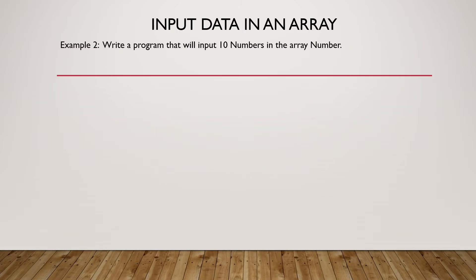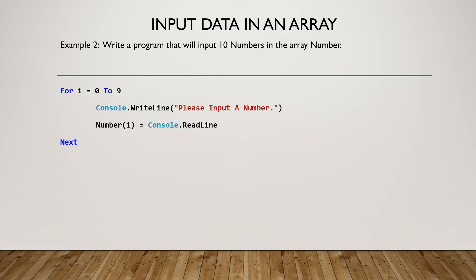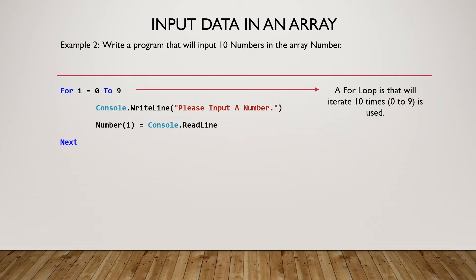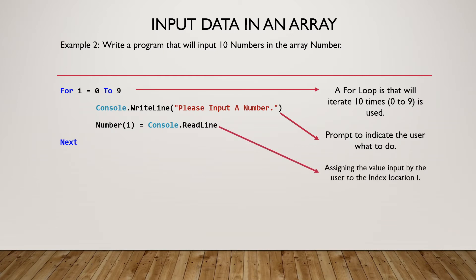The next part of the lesson is how to input data in an array. For example 2, we are writing a program that will input 10 numbers in the array 'number'. We will have a For loop that will iterate 10 times from 0 to 9, followed by a prompt to indicate to the user what to do, and lastly assigning the value input by the user to the index location i.